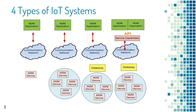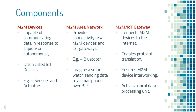The M2M applications generally run on a cloud system. On the right side of the screen, a gateway as well as a service capabilities layer are introduced to handle much more complex IoT scenarios. There are six components you will see in any IoT system.